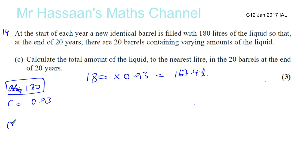So we can say that the first term, it's not going to be 180, it's going to be 167.4, because at the end of that first year, that's how much water will be in that first barrel. Then you'll have another barrel by the end of the first year. End of the second year, it's going to be 167 litres in that, and it's going to continue going down and down and down after that. So there's 20 years altogether, so we can put N equals 20 here.